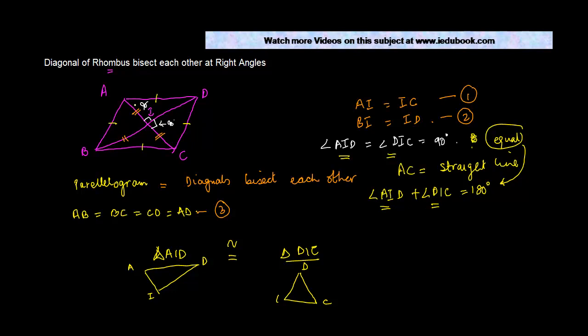And to do that, I need to prove that triangle AID is congruent to triangle DIC.